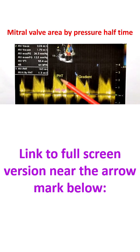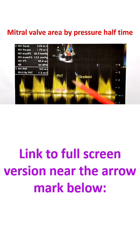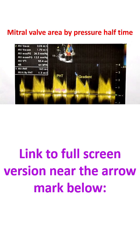Without mitral stenosis, the E and A waves will be independent waves with a nearly horizontal baseline in between. That is not seen in mitral stenosis because the stenosis creates a continuous gradient between the left atrium and left ventricle, which is what you are seeing here.